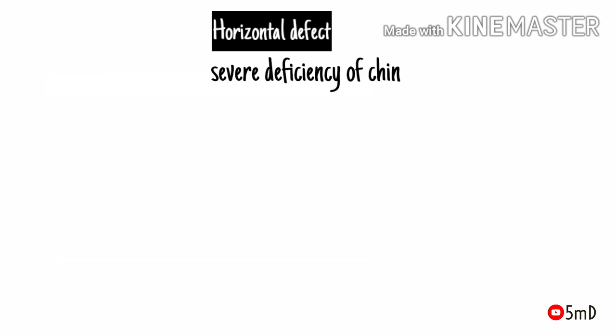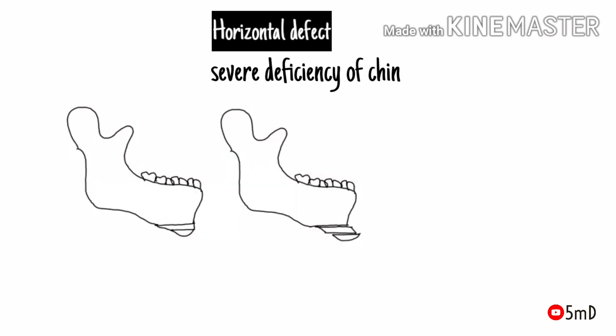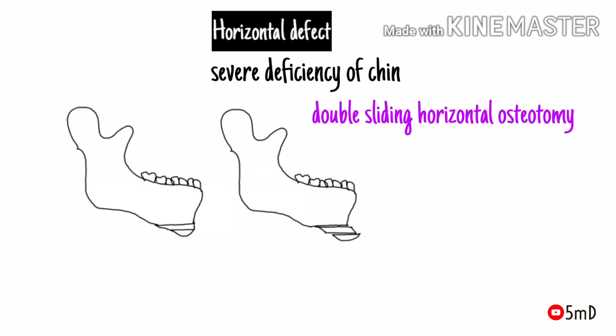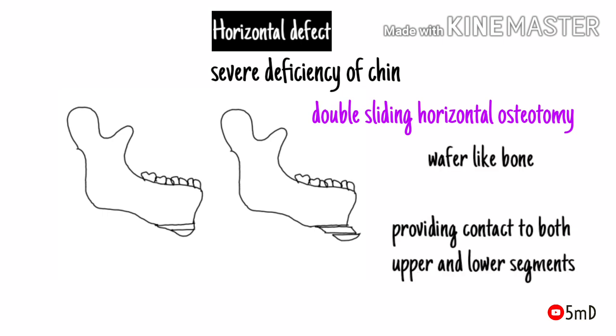In cases of severe chin deficiency where greater advancement is needed, a double sliding horizontal osteotomy may be performed. In this technique, a middle fragment of bone acts as a wafer, supporting both the upper and lower parts of the chin and providing sufficient contact between them.